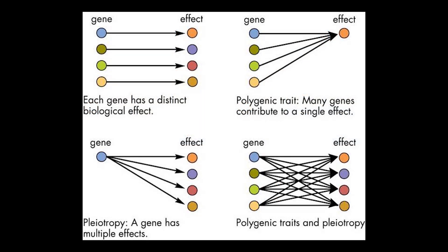Phenotypic expression of certain traits is often defined by many genes, or polygenic traits, and in some cases many traits are defined by one gene, or pleiotropic traits. Genetic inheritance is a very complex topic that's influenced by many, many factors.